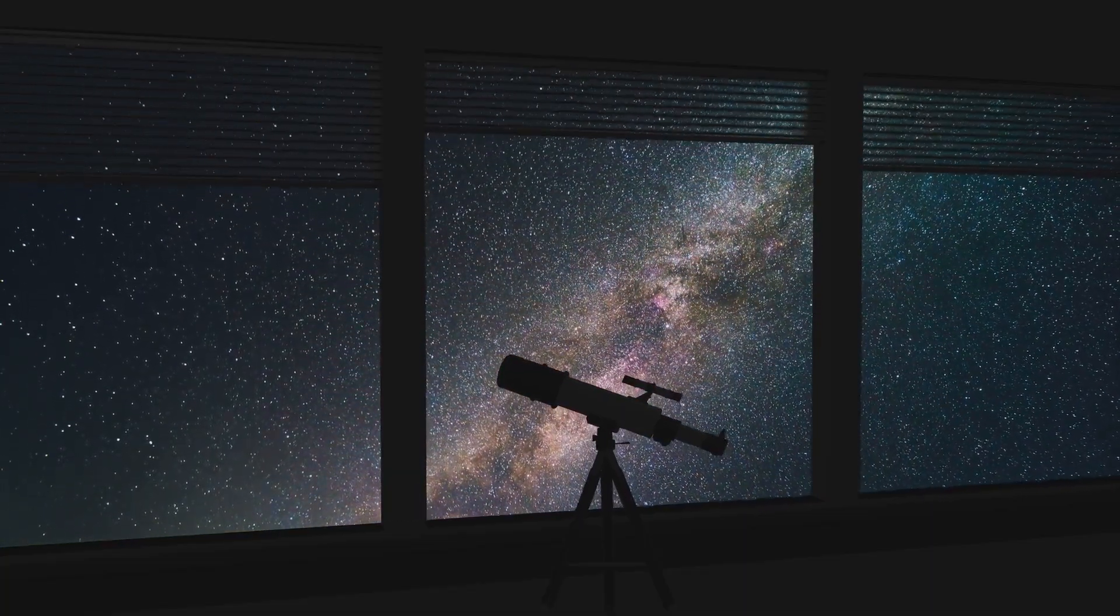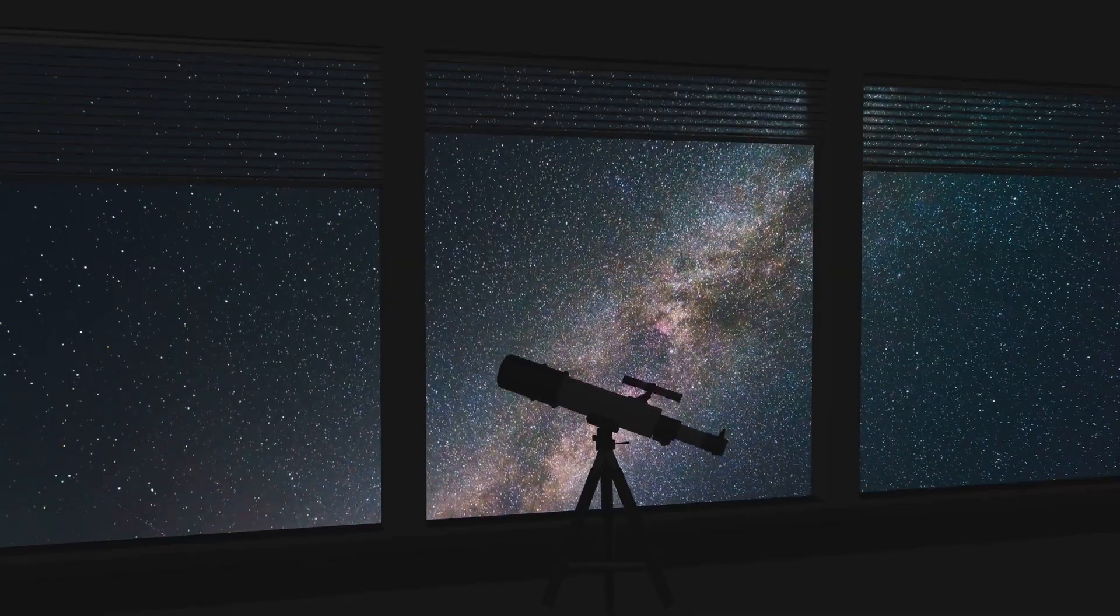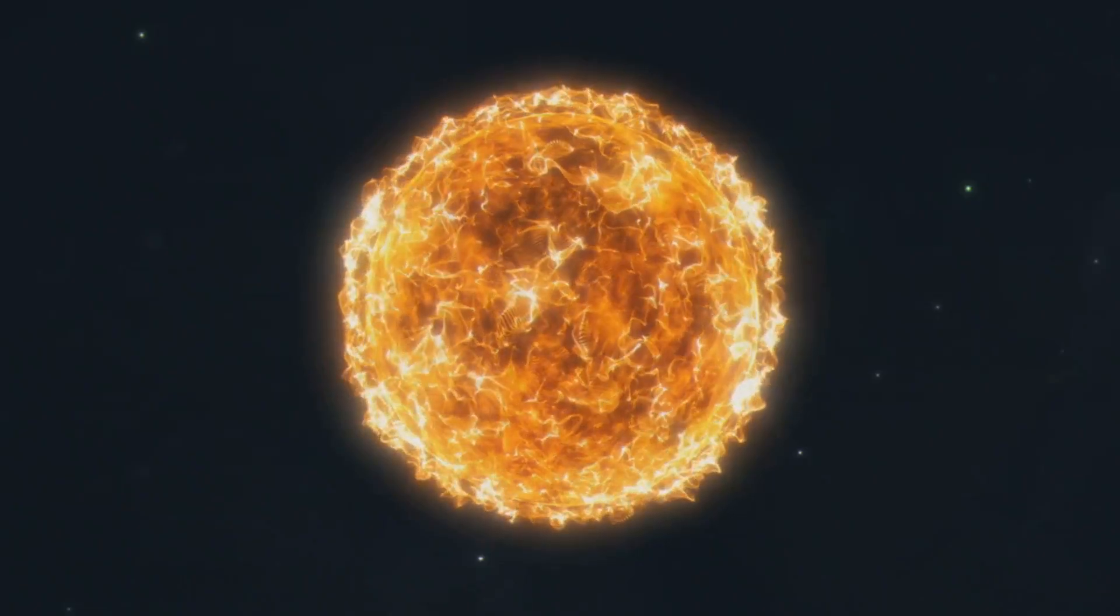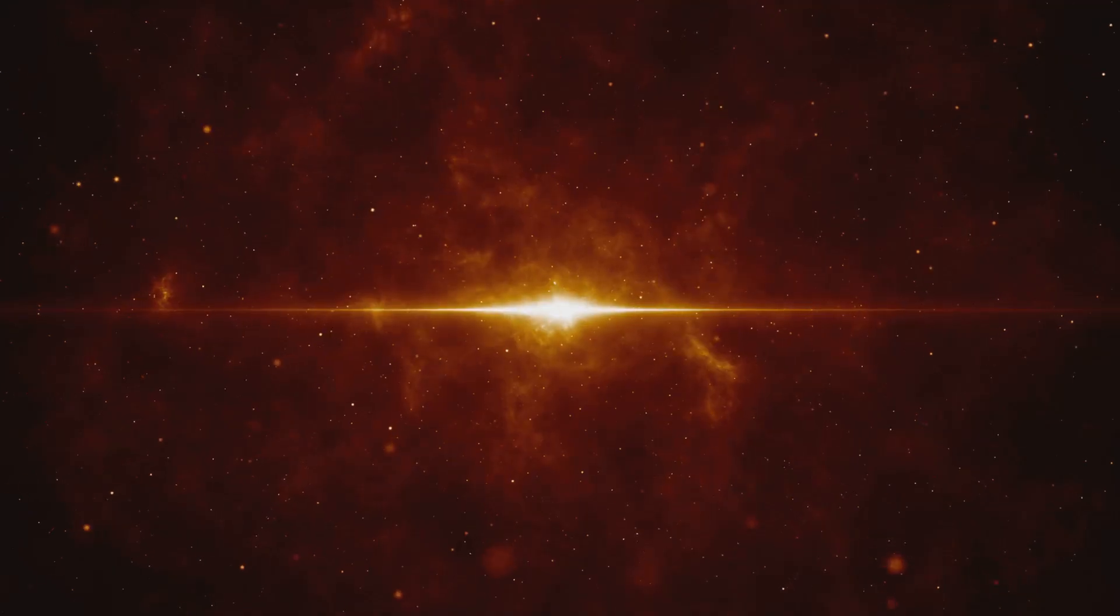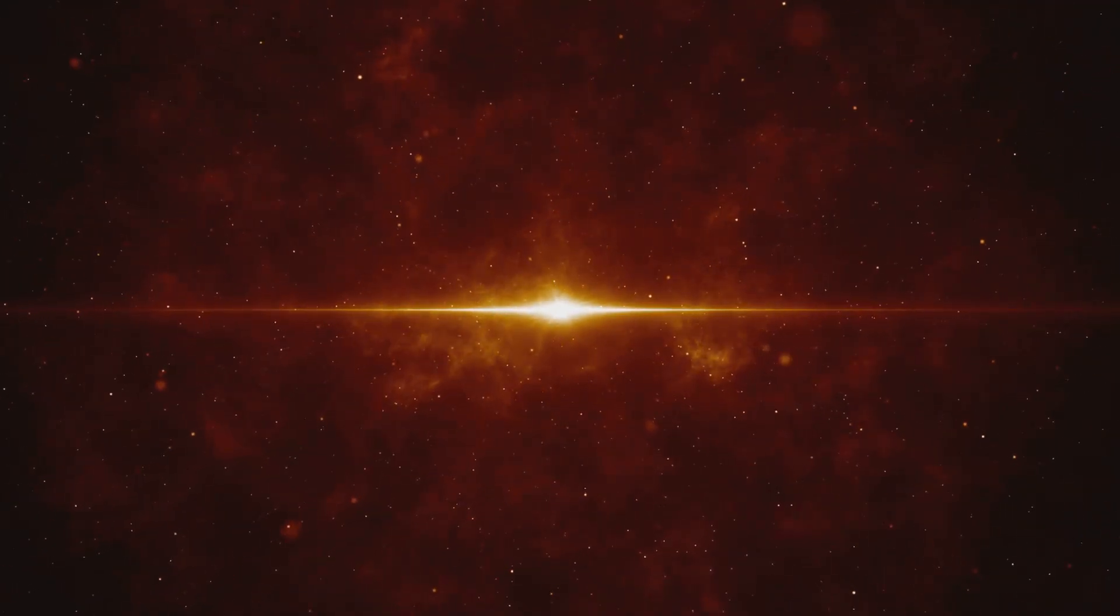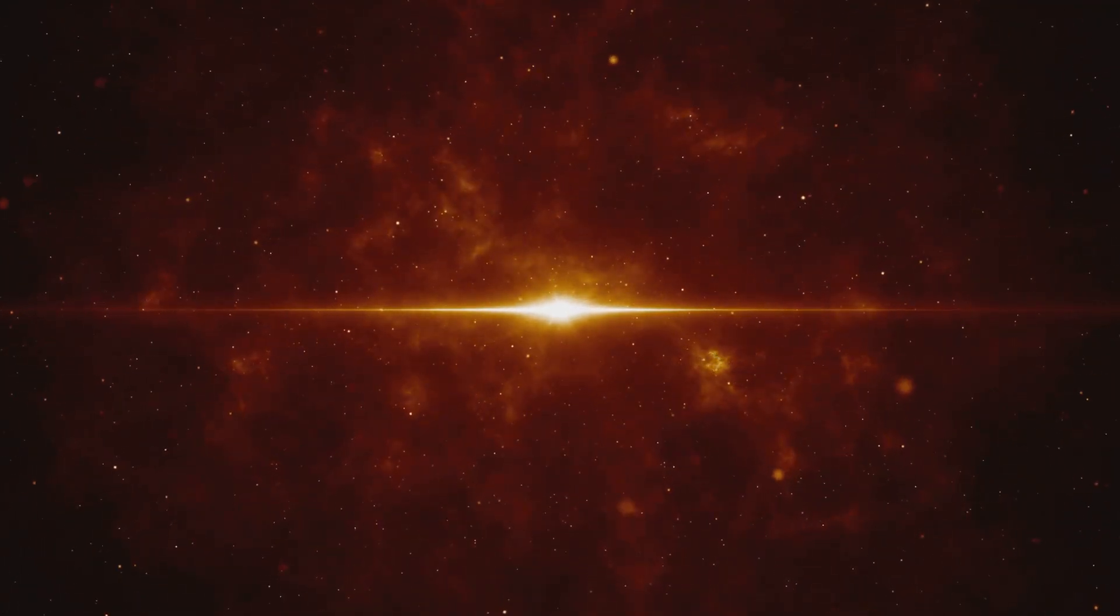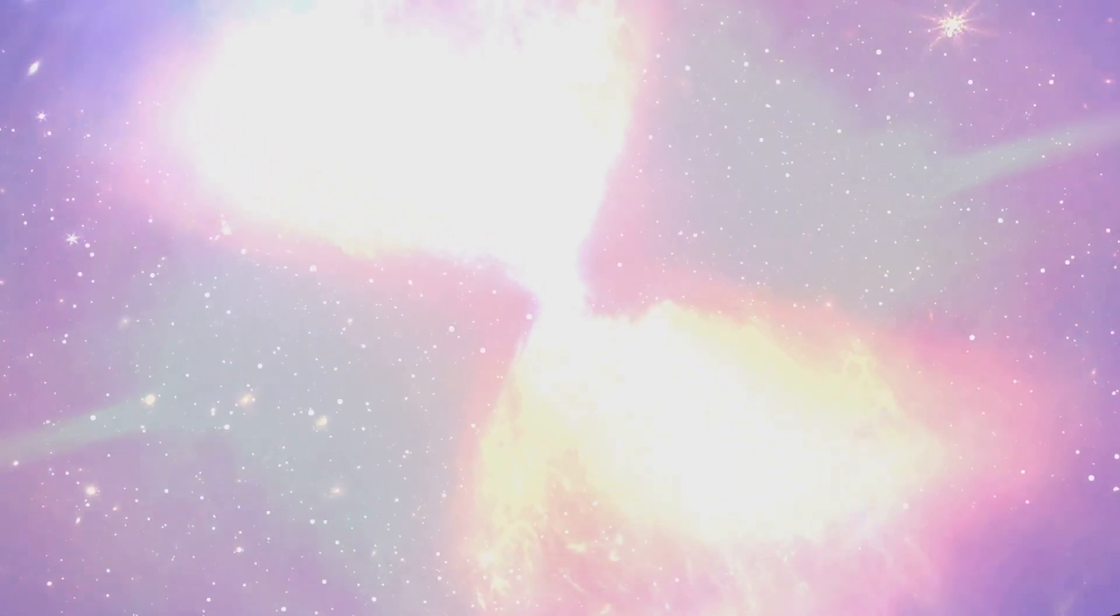To understand pulsars and magnetars, we need to know where they come from. They are born when giant stars, much bigger than our sun, die. When these huge stars run out of fuel, they can't fight against gravity anymore. The center collapses, causing a huge explosion called a supernova.